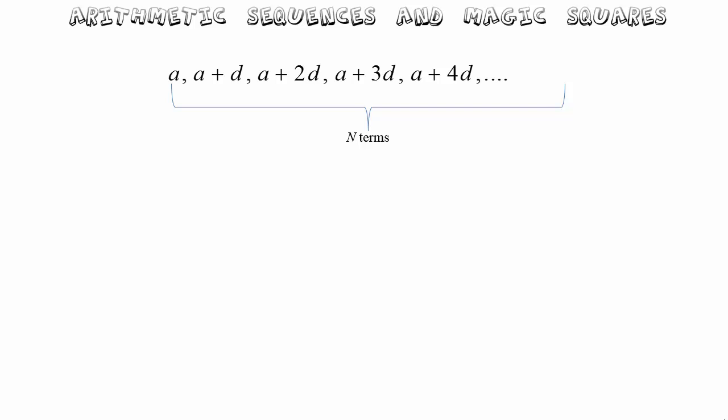Now let's see how this relates to an arithmetic sequence. An arithmetic sequence consists of an ascending or descending pattern of numbers where the difference between any two consecutive numbers is a constant. We refer to the first term as a and the common difference as d. The number pattern is: a, a plus d, a plus 2d, and so on. The formula for the sum of n terms is shown on screen.